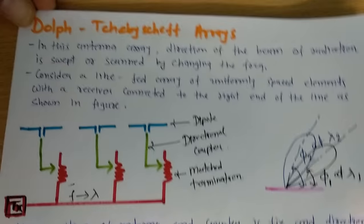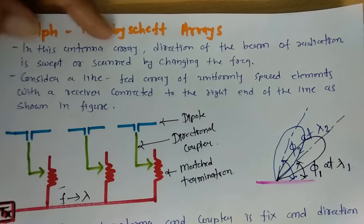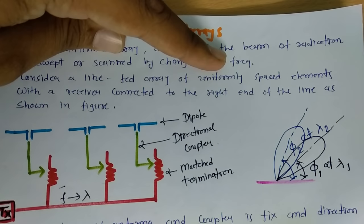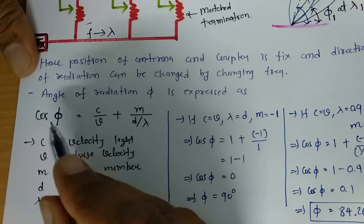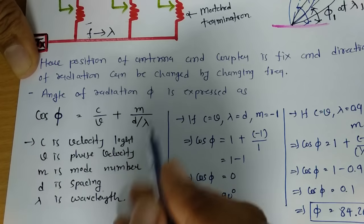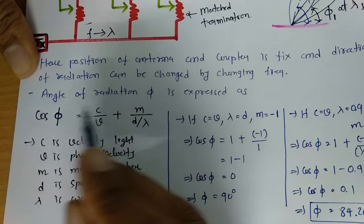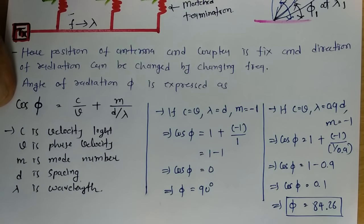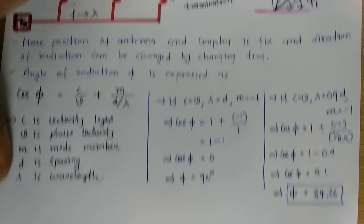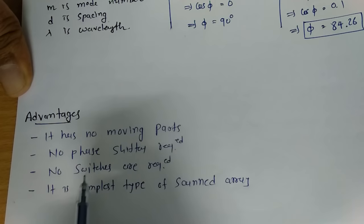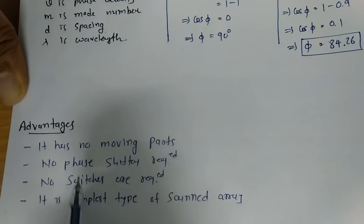In Dolph-Chebyshev array, we can steer antenna beam by changing frequency. This is very important formula: cos(φ) = C/V + M/(D/λ). By using this formula, one can calculate how we can steer a beam of antenna array. This method of Dolph-Chebyshev array is very important.